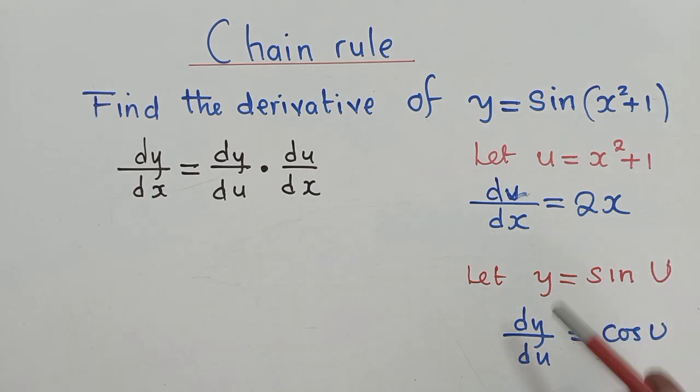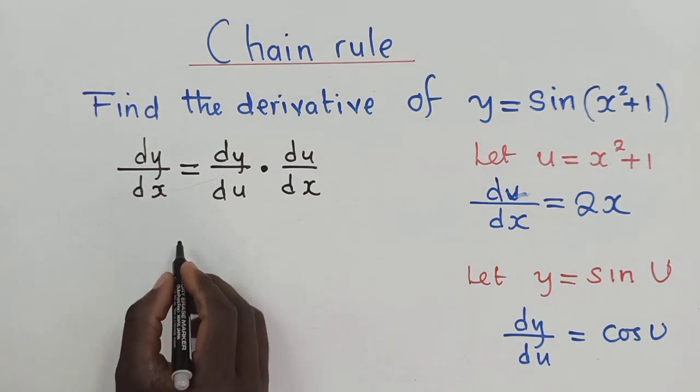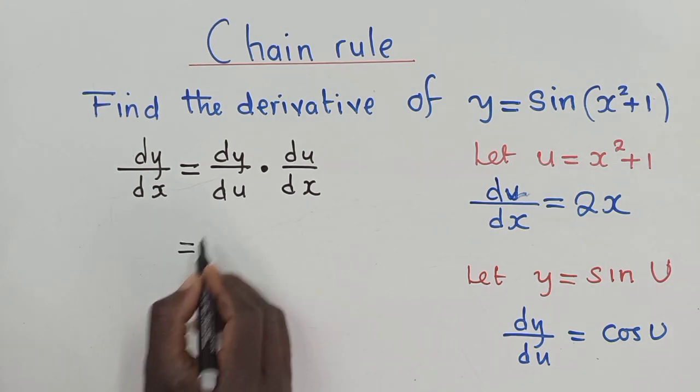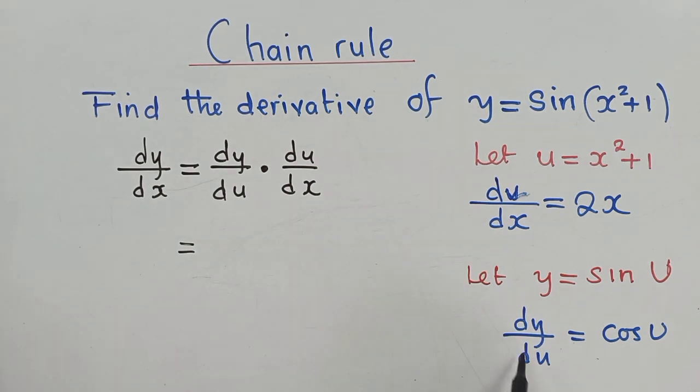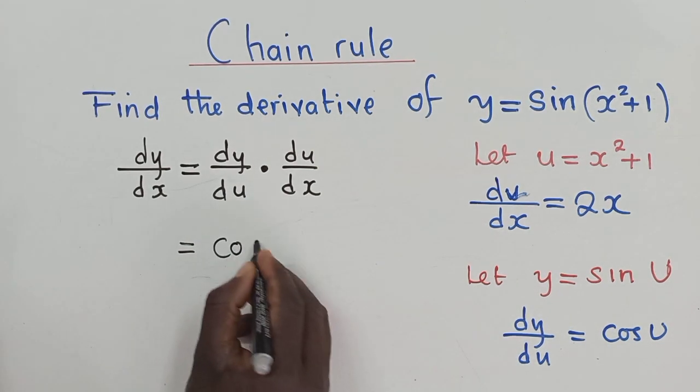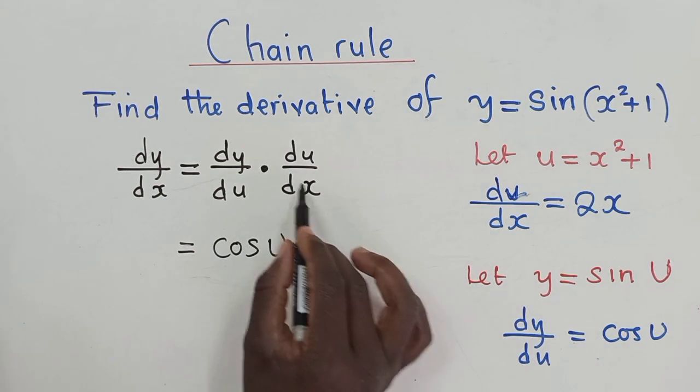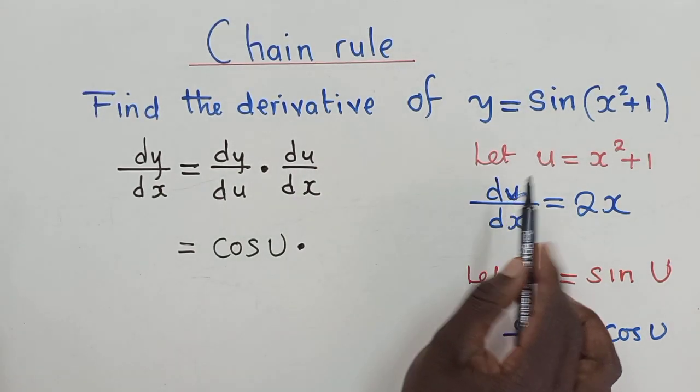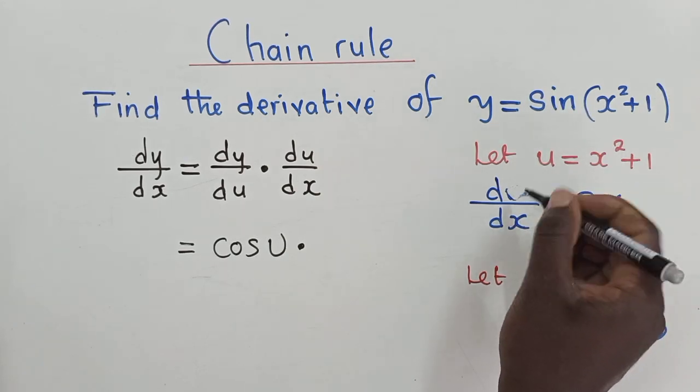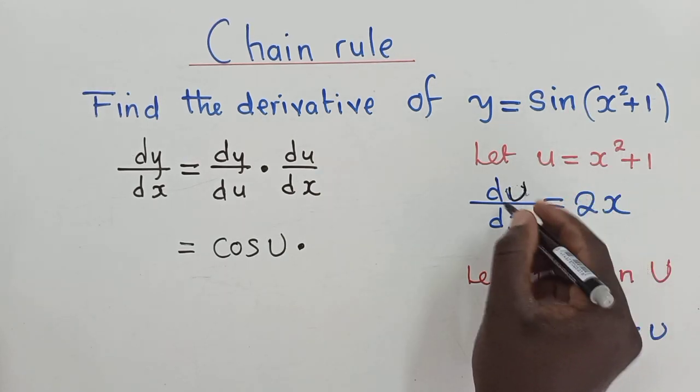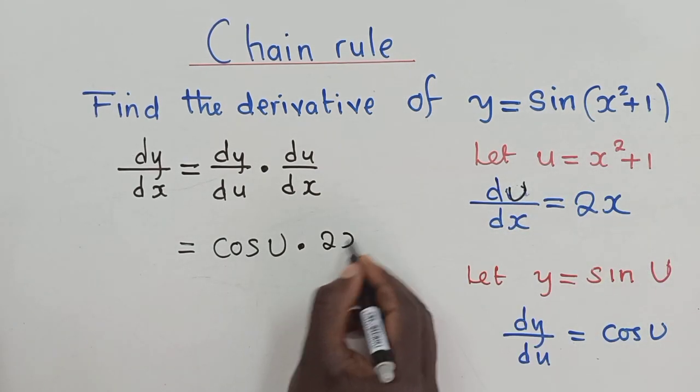So now we can plug them in. We come to our formula here, the chain rule formula. So we'll say what is our dy du? It's cos u. What is our du dx? This is u right here. Du dx is 2x.